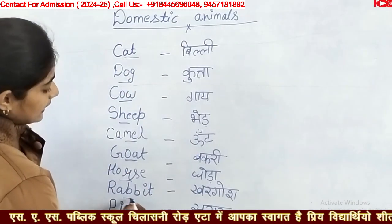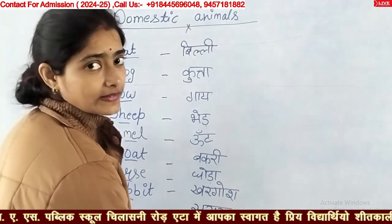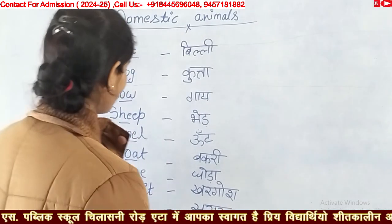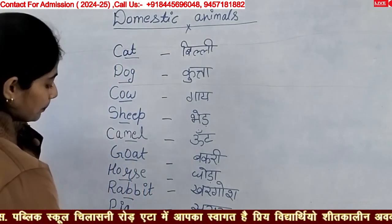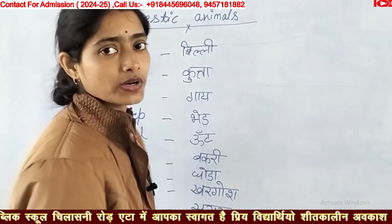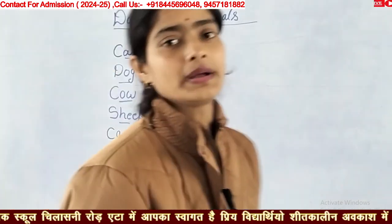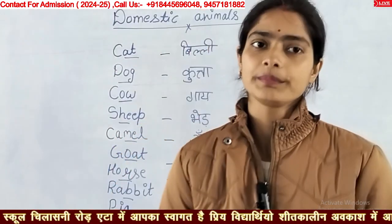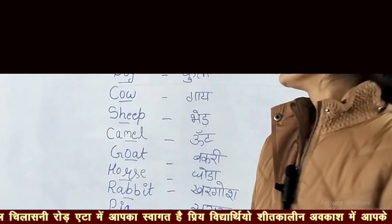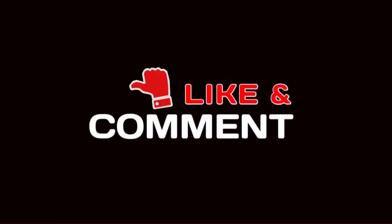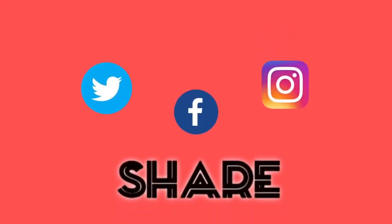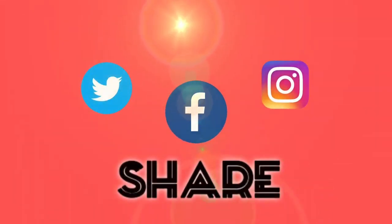R-A-B-B-I-T — rabbit means khargosh. Khargosh ko bhi hum apne ghar mein paalte hain. Pig means suar. Suar ko bhi hum paalte hain. Is liye aap log isko repeat kar lein. Thank you.